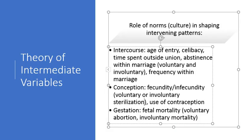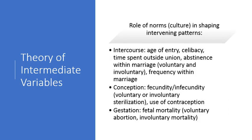The theory of intermediate variables gets right down to the immediate causes of fertility. Those include intercourse, conception, and gestation, so the focus is cultural — on norms that shape thinking and behaviors around those three things. This includes things that would influence age of entry into sexual intercourse, celibacy, time spent outside unions, abstinence within marriage, frequency within marriage, and in terms of conception, both sterilization and contraception. For gestation, the topic of abortion — of course very controversial, and different cultures have different takes on that — is going to impact fertility levels.